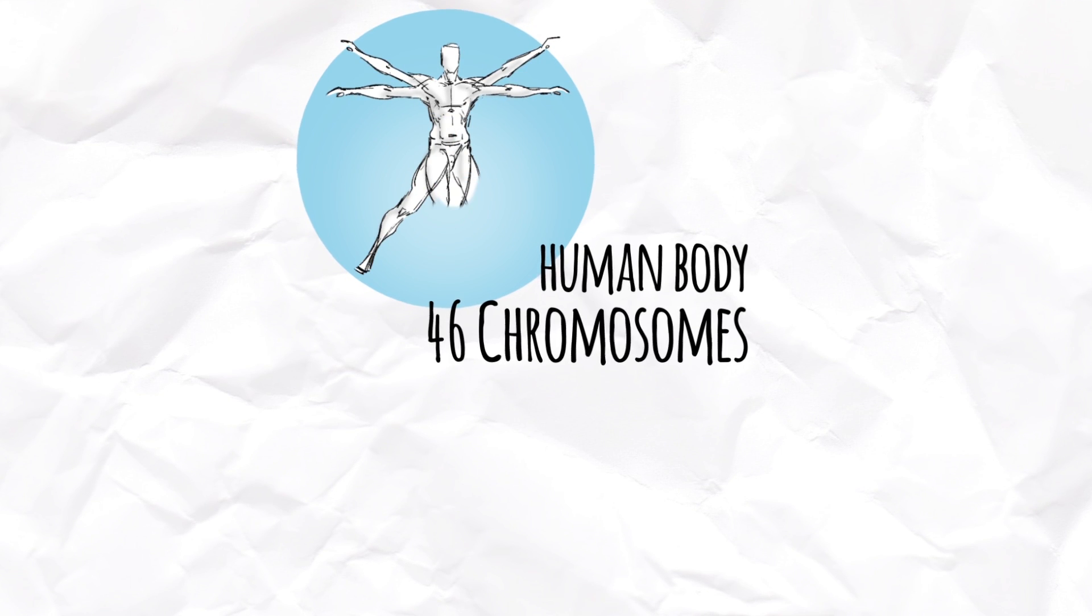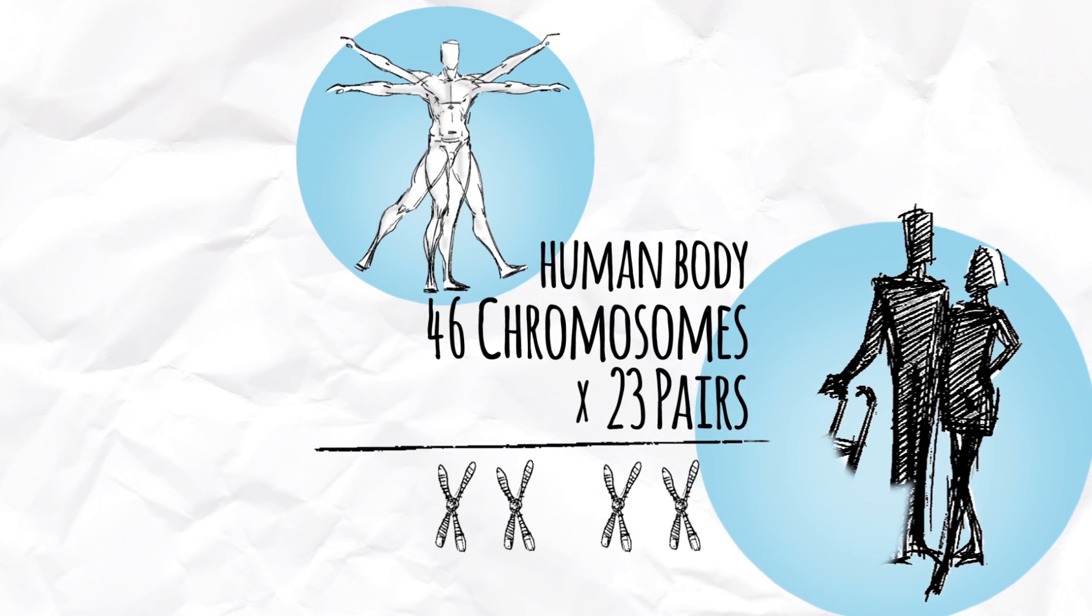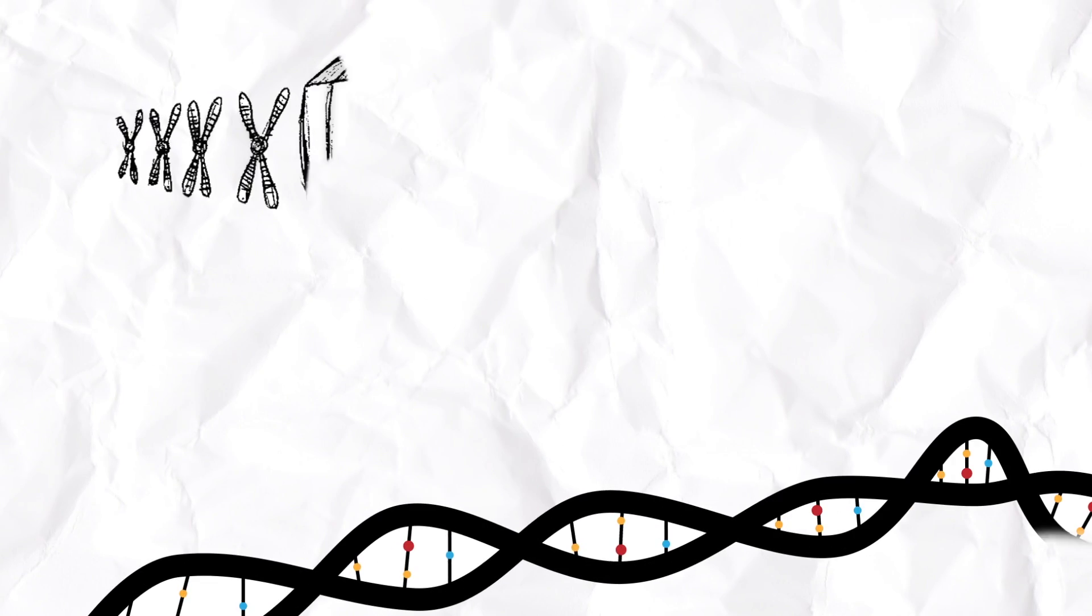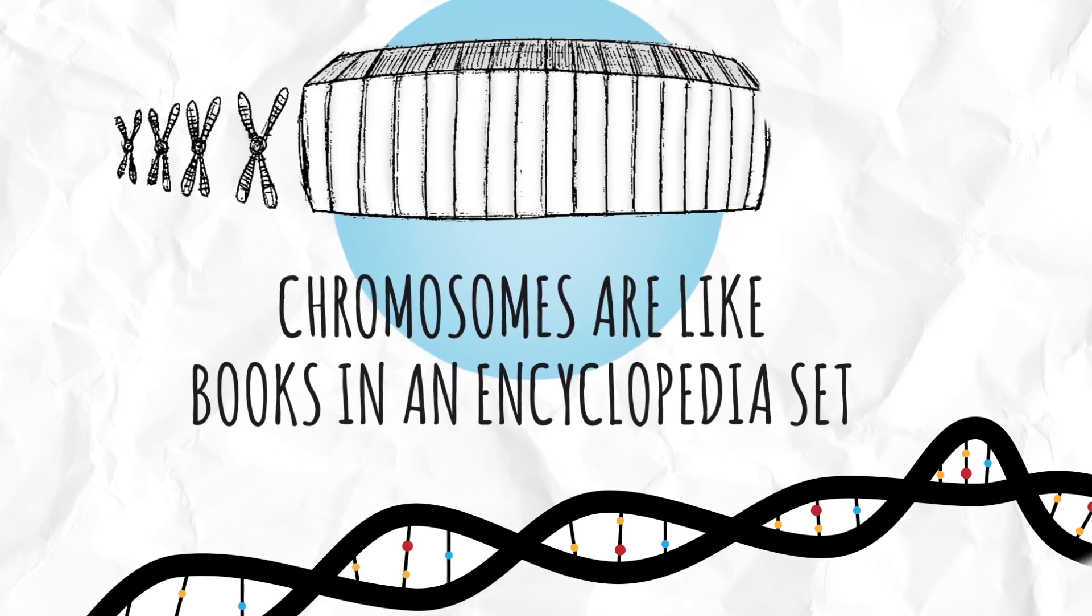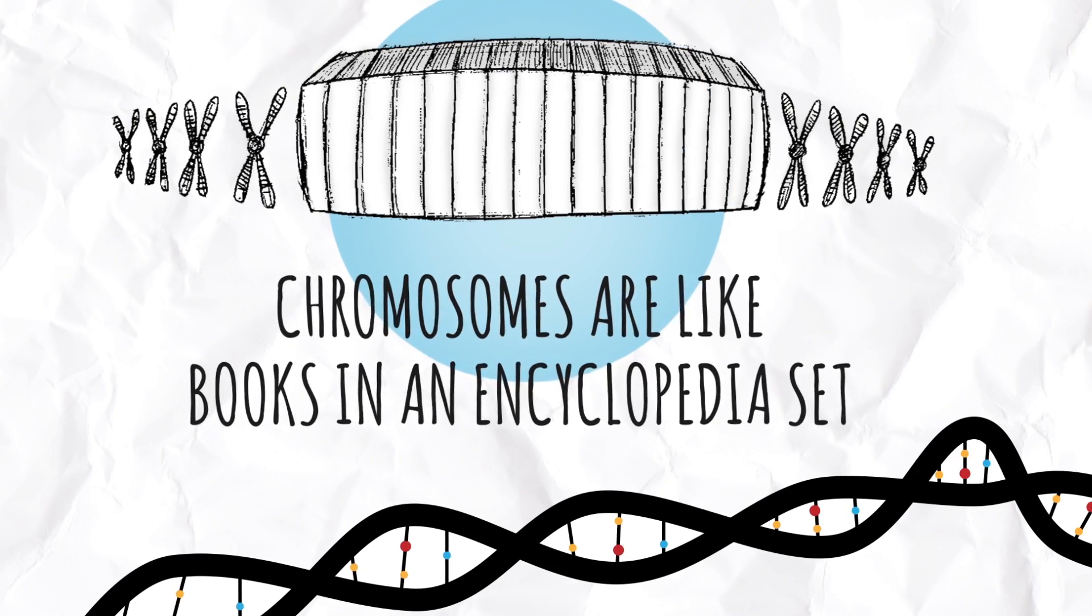The human body is made up of 46 chromosomes that come in 23 pairs, one set from our mother and one set from our father. Chromosomes are like different books in an encyclopedia set. Each book carries different information, yet all together they make up a very important reference set.